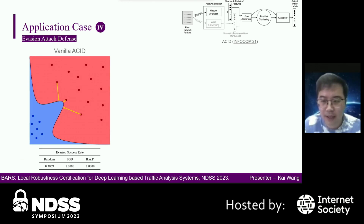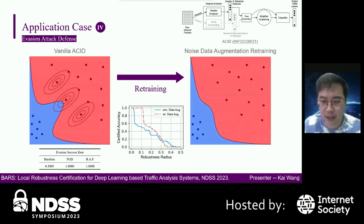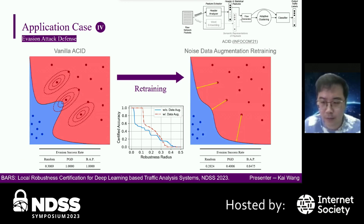The fourth application case of BARS is evasion attack defense. In ACID, the classification boundary might be uneven, making it susceptible to evasion attacks. We can retrain ACID with noise data augmentation, where the noise is also optimized by BARS. After retraining, the classification boundary becomes smooth. As shown in the curve figure, the robustness radii of most samples become larger, and then the evasion success rate will be reduced.